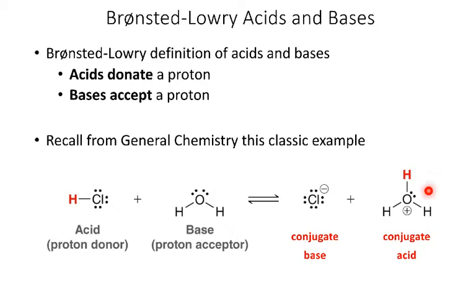The products can also be given names. The acid is paired with the conjugate base, and the base becomes the conjugate acid. We call it the conjugate base because if we imagine the reaction running in the other direction, the H3O+ would be donating the H+ to the Cl-, so going in the opposite direction, H3O+ acts like an acid and Cl- acts like a base.